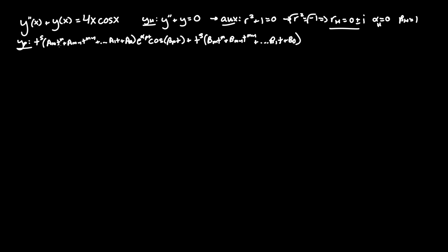We keep a and b terms matched — we can't switch to a, b, c, d to avoid confusion. Since there is no sine term on the right-hand side, that portion is effectively zero, but we can't just drop it yet.